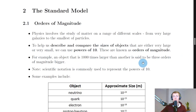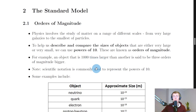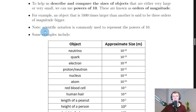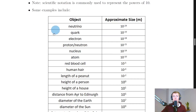For example, an object that is 1000 times larger than another object is said to be three orders of magnitude bigger. One order of magnitude is multiplying by 10 once, so for the number 1000 we can write that in scientific notation as 1 times 10 to the power of 3, and that 10 to the power of 3 tells us it's three orders of magnitude bigger. It allows us to describe and compare the sizes of objects. Scientific notation is commonly used to represent the powers of 10.